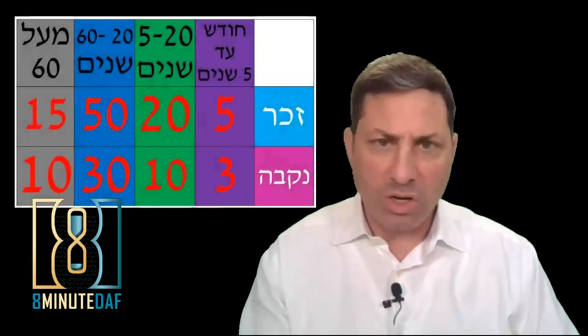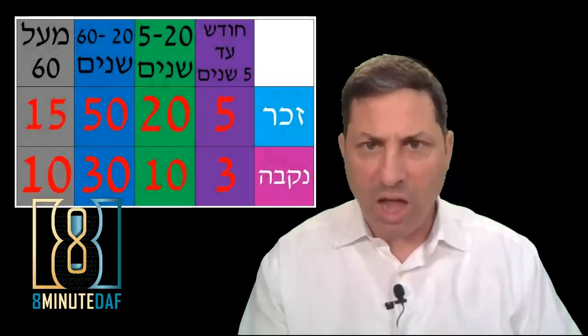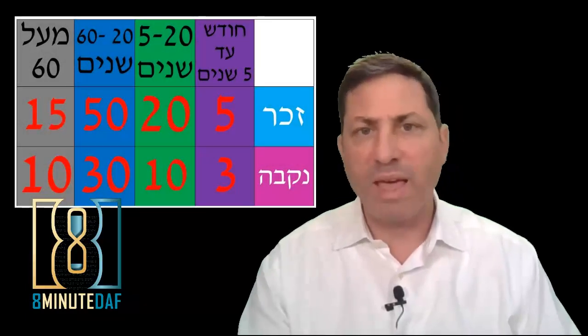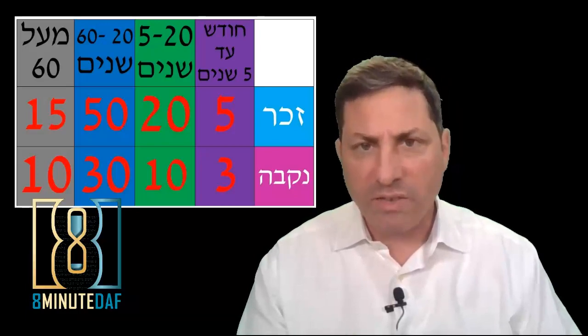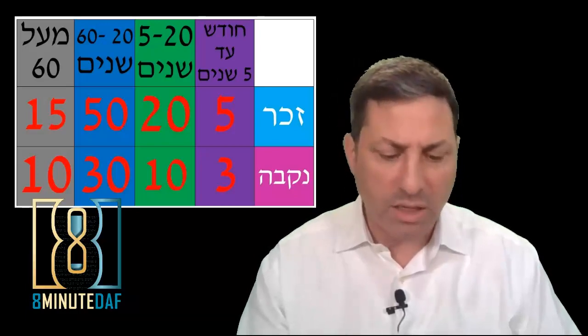Finally, the Braisa mentions Ben or Bas. You could say it's talking about our Mishnah, Saris and Aylonas, or you could say that it's talking about Erechin. When the Torah says that a child from five years on, it's referring to M'eis L'eis, the child has five full years. Rav says it's talking about Erechin. Rabbi Yosef says it's talking about our Perek of Yevamos, Saris and Aylonas.